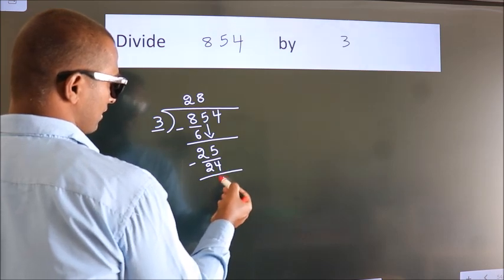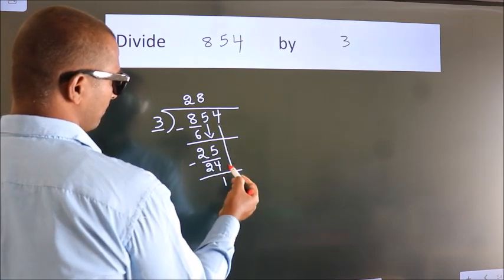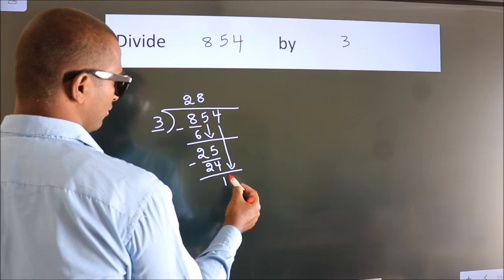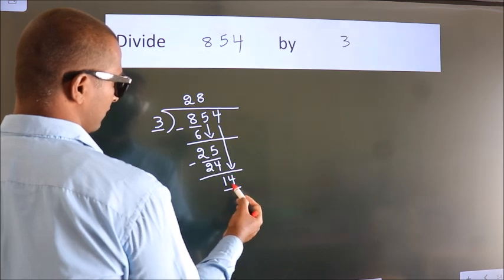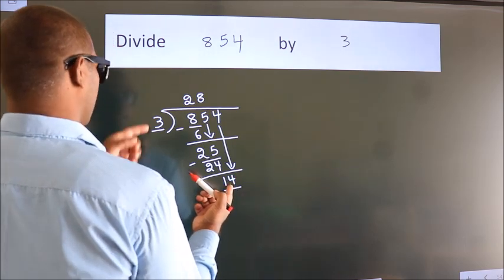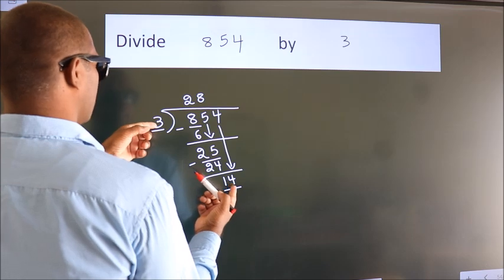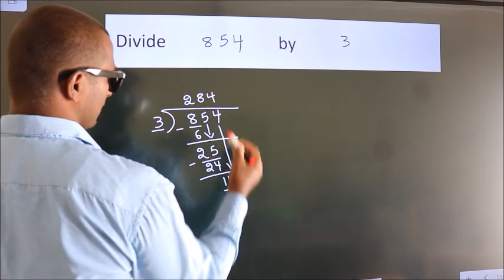After this, bring down the beside number. So 4 down, giving us 14. A number close to 14 in 3 table is 3 times 4, which is 12.